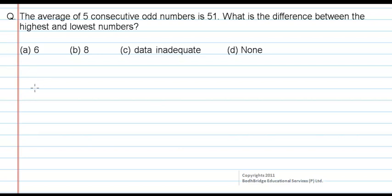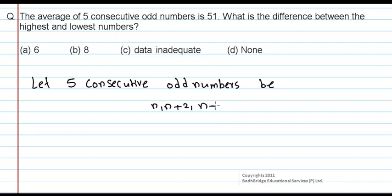So, let us assume the five consecutive odd numbers be n, n plus 2, and so on. Let five consecutive odd numbers be n, n plus 2, n plus 4, n plus 6, n plus 8. That's five numbers.